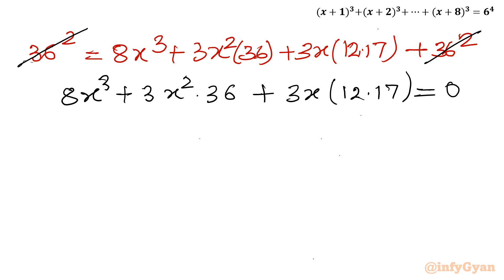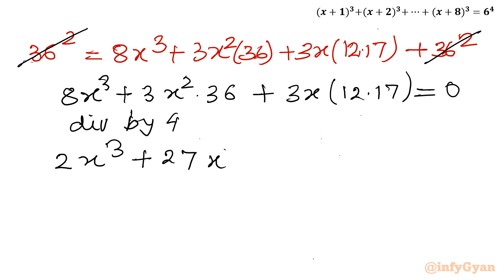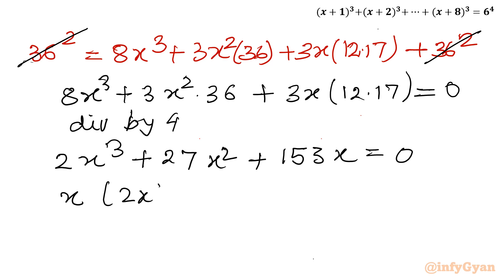This equation is divisible by 4. Dividing both sides by 4 gives: 2x³ + 27x² + 153x = 0.